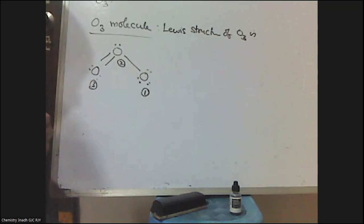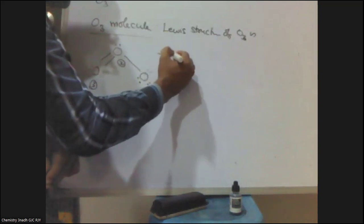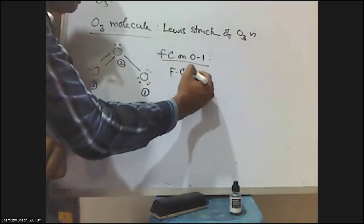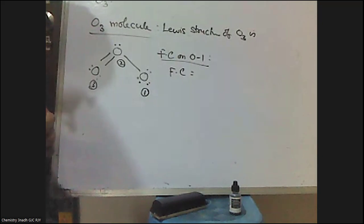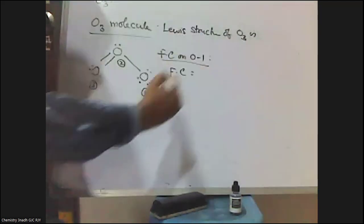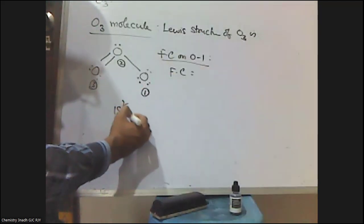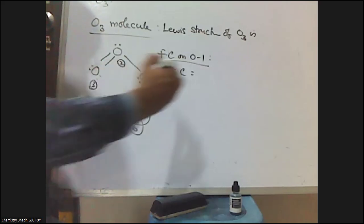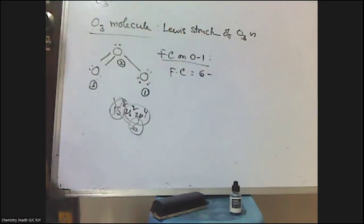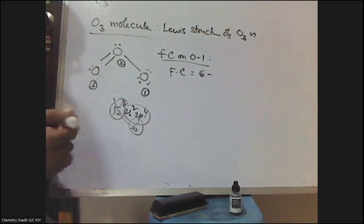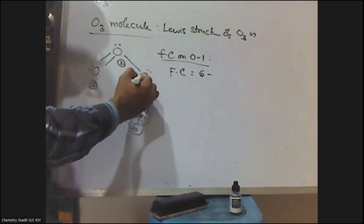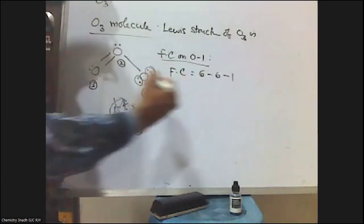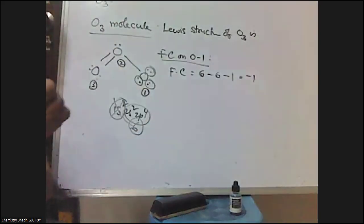Let me calculate the formal charge on oxygen labelled one. The electronic configuration of oxygen is 1s², 2s², 2p⁴, so there are six valence electrons. Formal charge = 6 − (number of unshared electrons) − (number of bonds). Oxygen one has three lone pairs, so six unshared electrons, and only one bond. Therefore, formal charge = 6 − 6 − 1 = −1. So the formal charge on oxygen one is minus one.